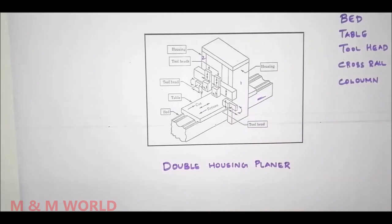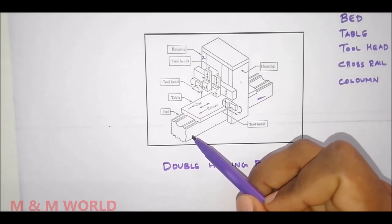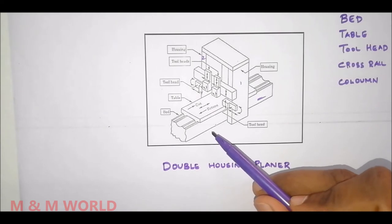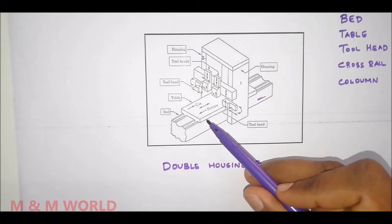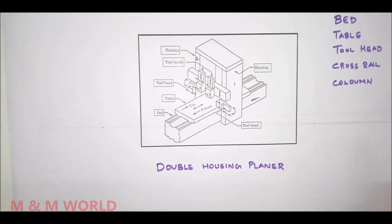In a standard machine we have two V-type guideways, and the guideways must be horizontal, true, and parallel to each other. The hollow space within the box-like structure of the bed houses the driving mechanism for the table. This is all about the bed of a planer machine.